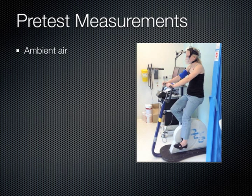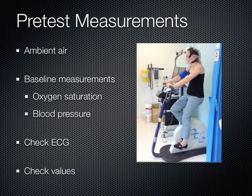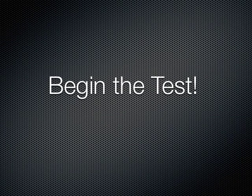Set the patient on the ergometer and measure the ambient air. After attaching the saturation probe and blood pressure cuff, take a baseline measurement. Do not begin the test if the patient's heart rate is above 125 beats per minute, systolic blood pressure is over 200, or diastolic blood pressure is above 110 at rest. Attach the 12-lead ECG and the soft rubber mask. Press the blue play button to begin the preliminary recording to check if the ECG is working and looks normal. Check the oxygen values: is the respiratory exchange ratio between 0.7 and 1? Is the VO2 between 2.5 and 6 milliliters per kilogram per minute at rest? Once you are satisfied with the preliminary recording, press the green play button to begin the test.